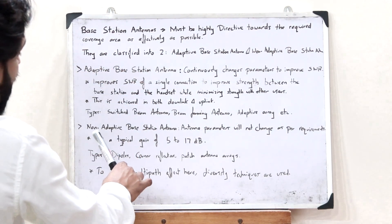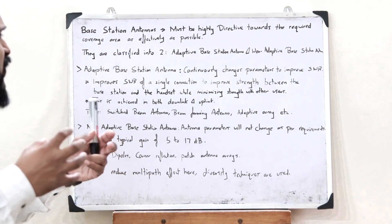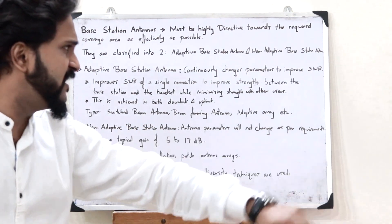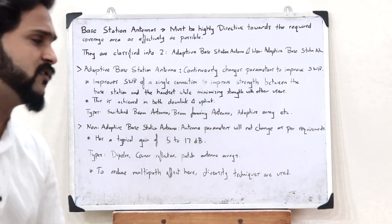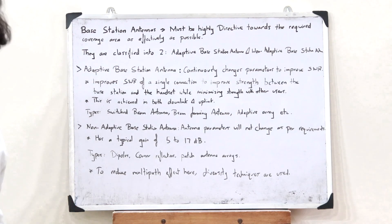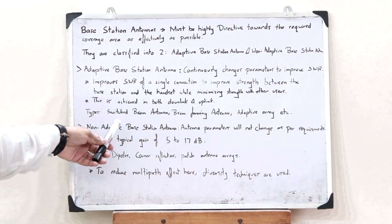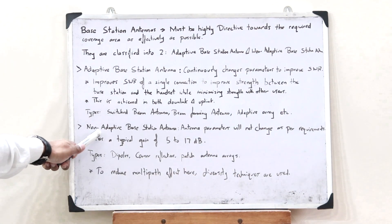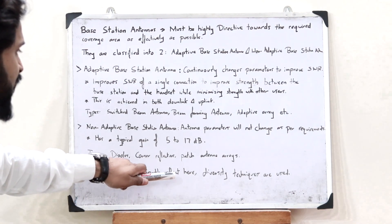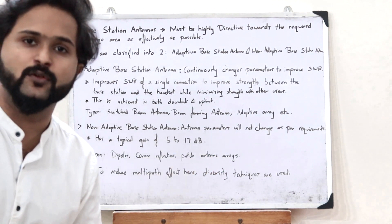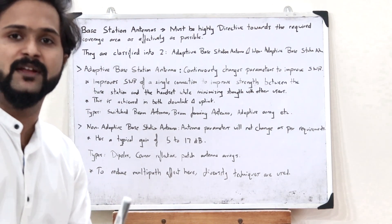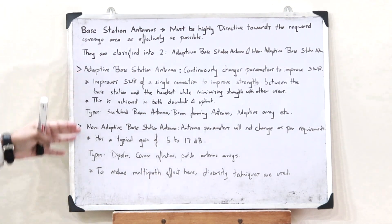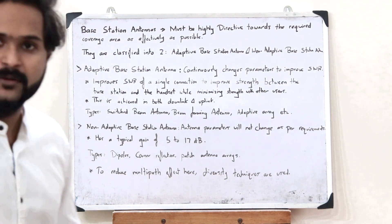Non-adaptive base station antennas do not change their parameters as per the requirements of a particular system. They have a typical gain of around 5 to 17 decibels. Types of non-adaptive base station antennas include dipoles, corner reflectors, and patch antenna arrays. In the case of non-adaptive base station antennas, diversity techniques are implemented to reduce multi-path effects. These are the two types of base station antennas seen in a typical communication system.